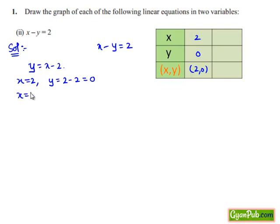Now let us put x equals 3 in the above equation. Then we get y equals 3 minus 2, which equals 1. So when x equals 3, y equals 1. Hence, the ordered pair (3, 1) is another solution of the given equation.